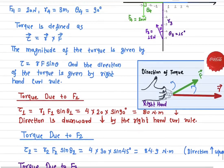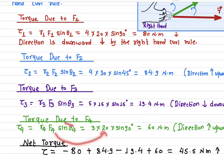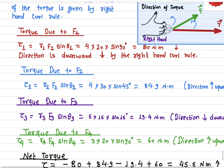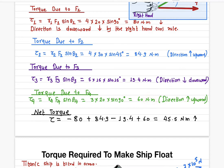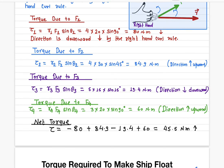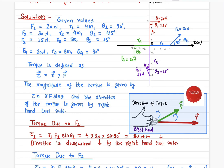For F4: r4·F4·sin(θ4). The distance is 3, F4 is 20 newtons, and the angle is 90 degrees, giving 60 newton-meters. The unit is newton-meters. For the net torque, we add all torques: downward torques are negative and upward torques are positive. The total net torque is 45.5 newton-meters in the upward direction — meaning with all these forces, the cap will move out of the paper.